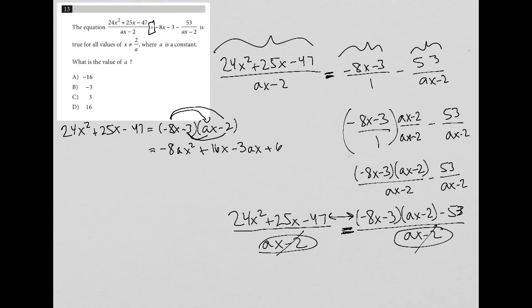That's all equal to my 24x squared plus 25x minus 47. So now I have some more matching to do. If these are the only two terms that say x squared, and it's all based upon the fact that they must be equal to each other, that tells me that negative 8a must be equal to 24.